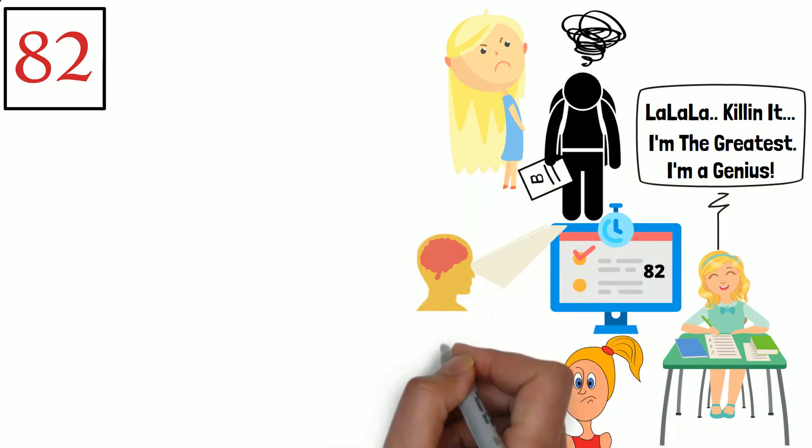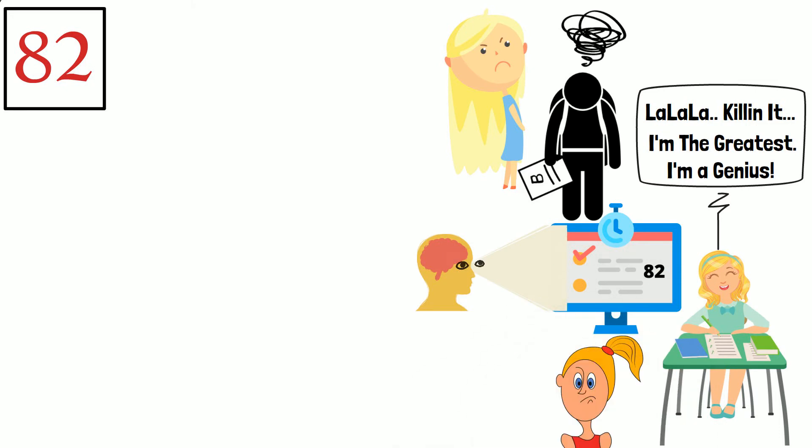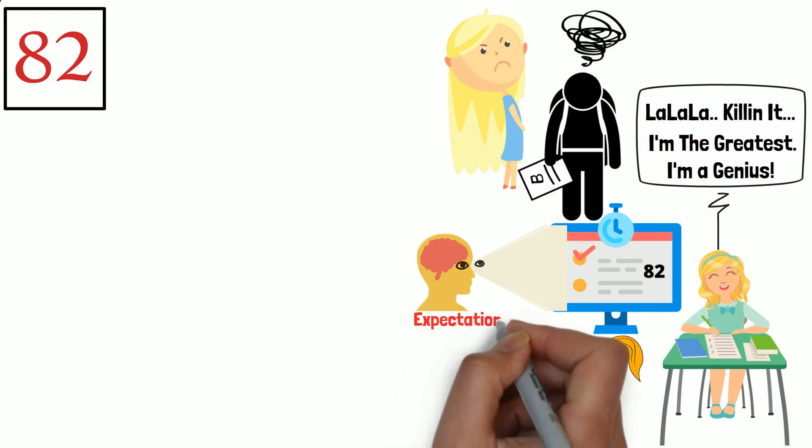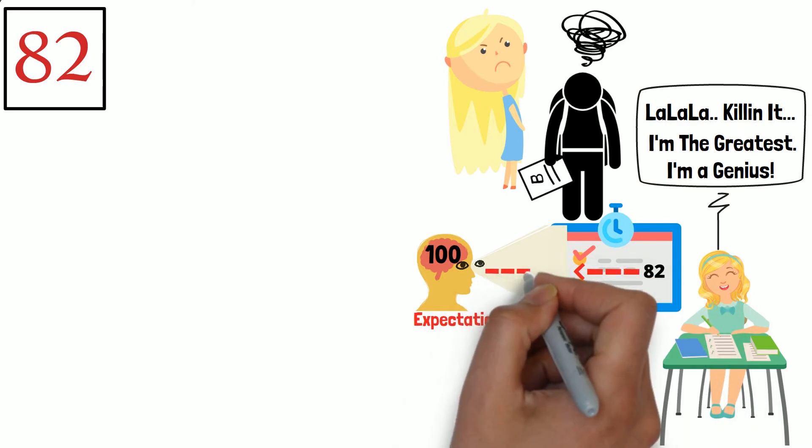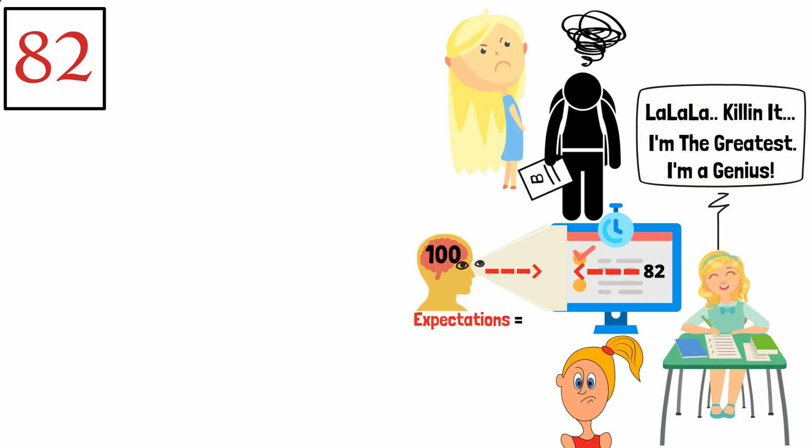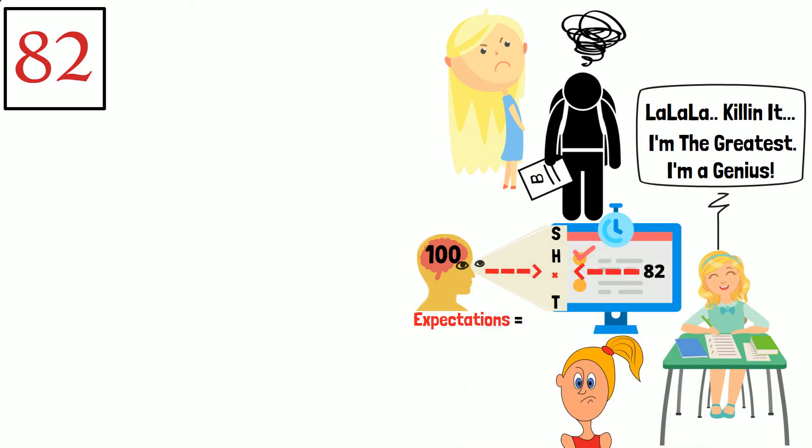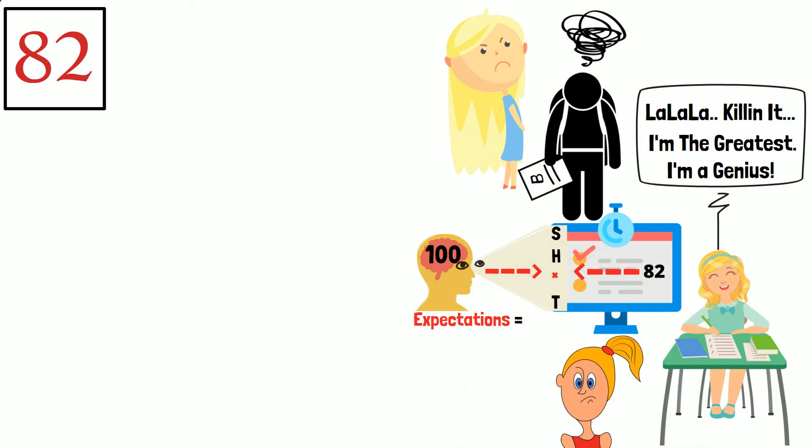The thing is, a score of 82 isn't bad, and it's not the grade itself that has caused you to feel any particular way. What has caused you the emotional turmoil is how that grade compares to your expectations of what it would be. You make an 82 and pass the test with a B, but because of the top-notch expectations you placed on the outcome of your grade, you pass the test but fail yourself.